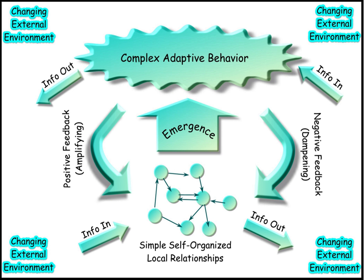Systems science is an interdisciplinary field that studies the nature of systems—from simple to complex—in nature, society, cognition, engineering, technology and science itself. To systems scientists, the world can be understood as a system of systems.